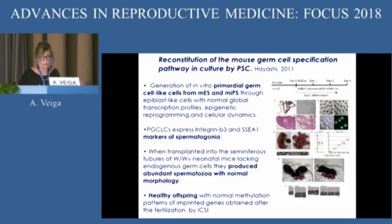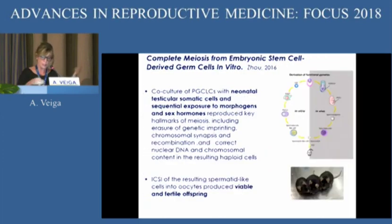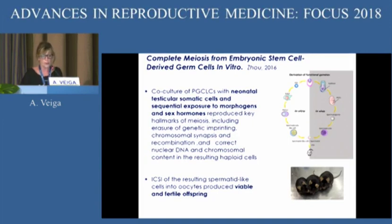Going to sperm, the situation is more or less exactly the same. Primordial germ cell-like cells are produced showing markers of these progenitor cells. When transplanted into the niche in vivo, they produce spermatozoa with normal morphology that give rise to healthy offspring. And then the same thing can be done in a completely in vitro situation — complete meiosis from embryonic stem cells in the mouse model — producing viable and fertile offspring. The same can also be done with IPS cells.